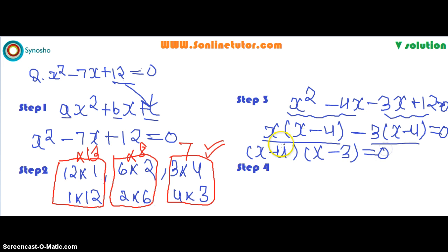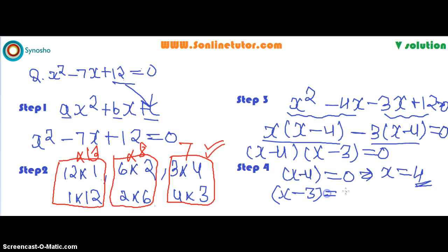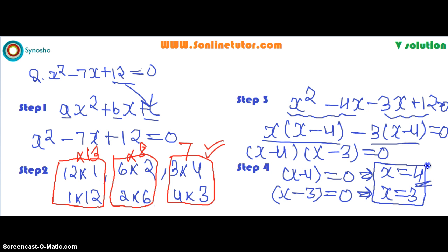Finally, to find the values of x, we set each factor equal to zero. Setting x minus 4 equals 0 gives x equals 4. Setting x minus 3 equals 0 gives x equals 3. So these are the two possible solutions of this quadratic equation.